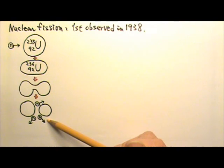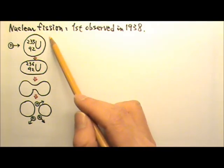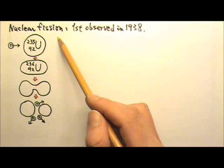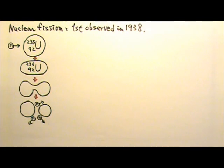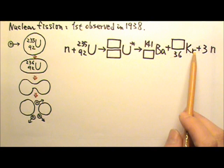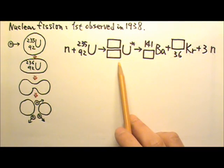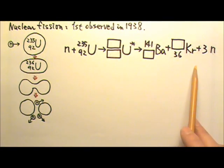This kind of nuclear reaction is called fission, a term borrowed from biology. A cell fissions when it splits into two. Here's a typical example of a fission reaction. See if you can fill in the numbers and balance the equation.